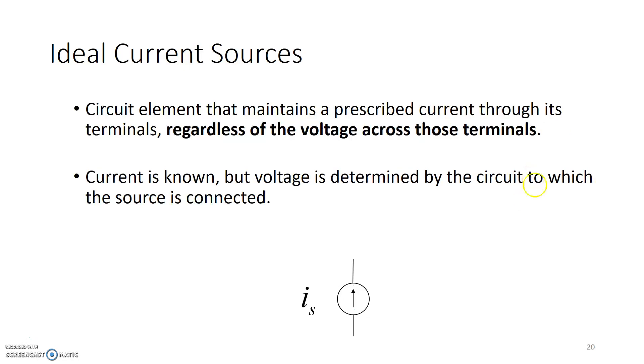Similarly, a current source is shown here. It's a circle with an arrow on it. A current source is an electrical component that is able to provide current to a load, regardless of how much voltage is across those terminals.